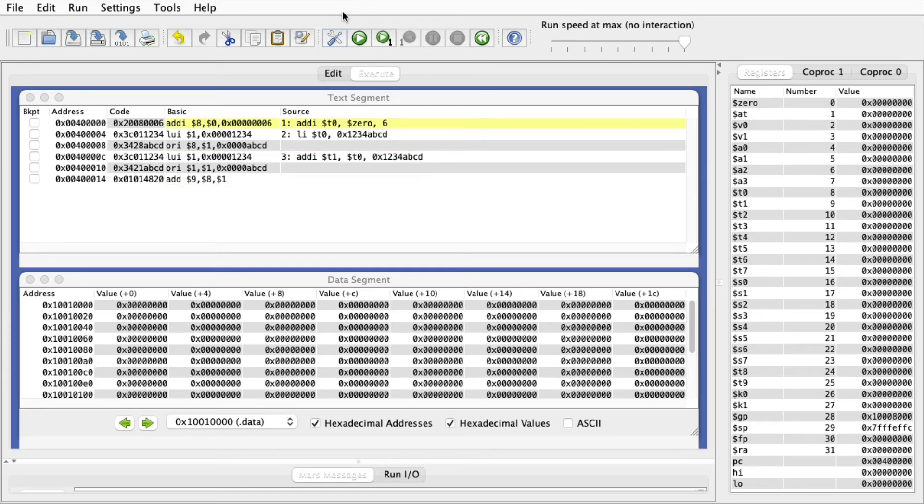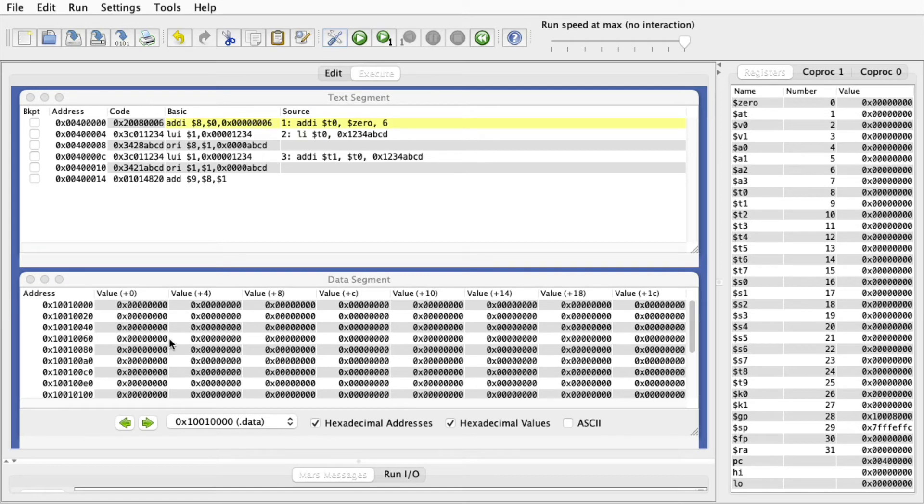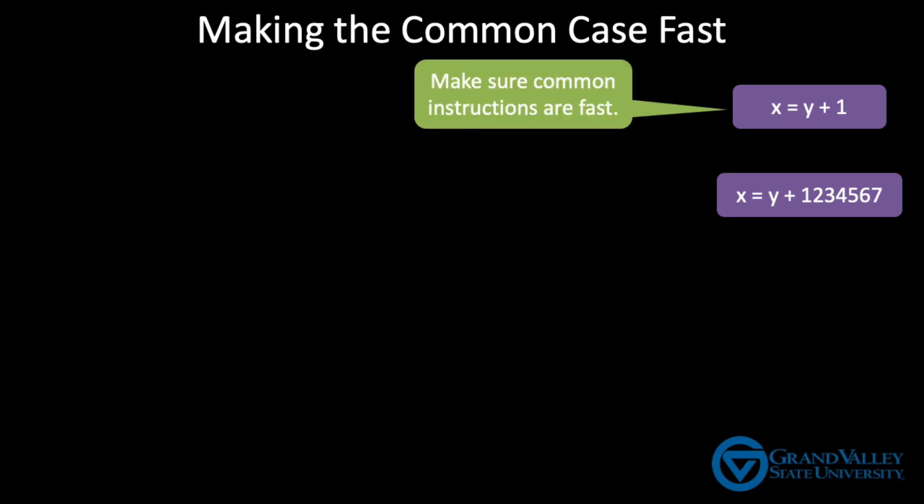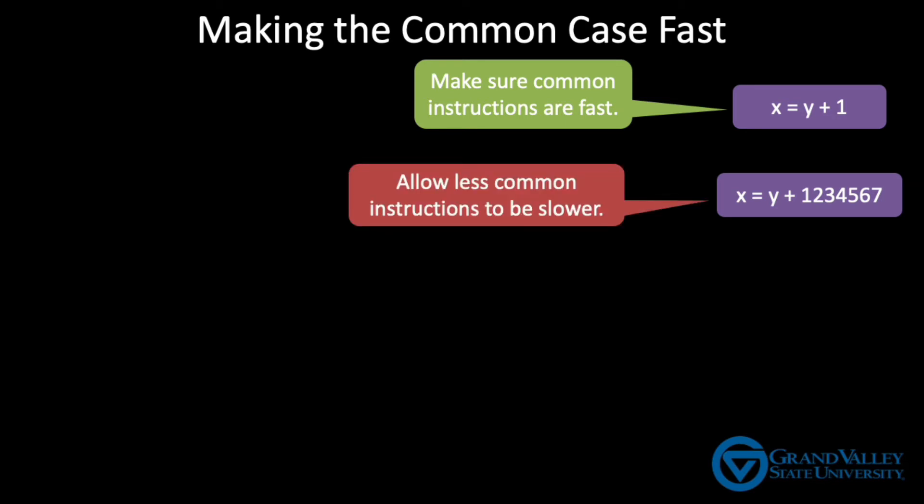So what does all of this have to do with making the common case fast? Well, think about the Java or C programs you've written. How often do you write lines of code that look like this as compared to this? I would expect that the small constants are much more common.